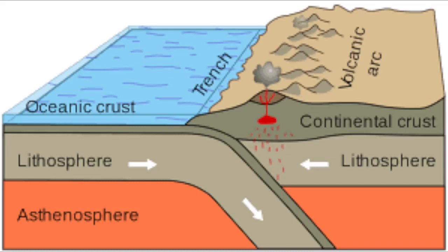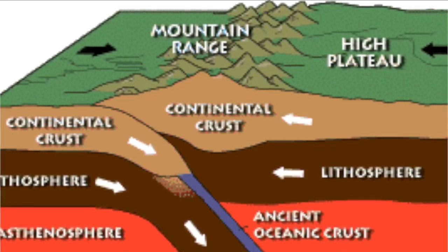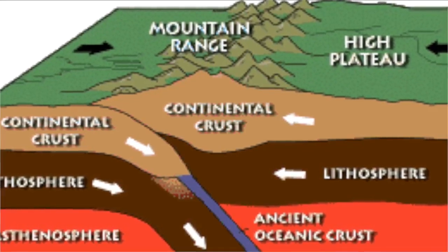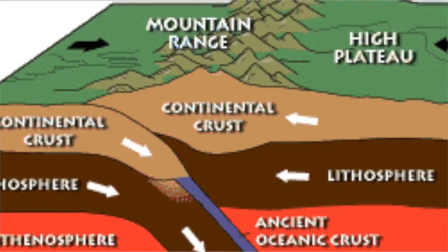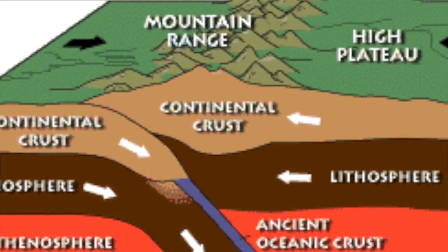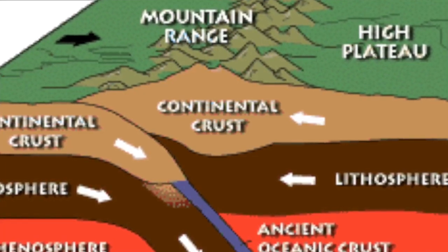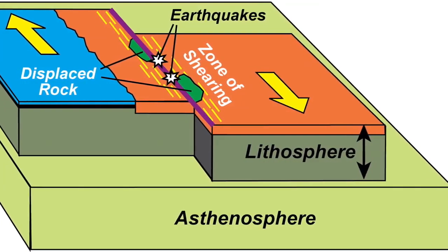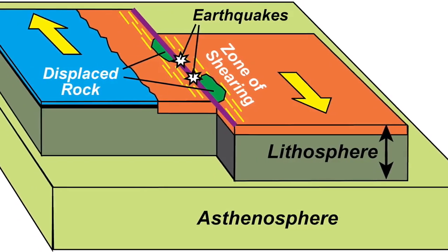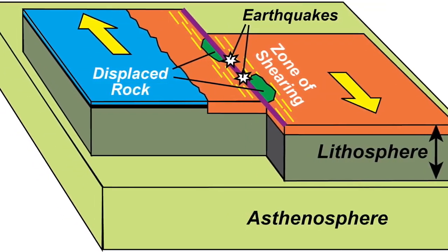At a convergent boundary where you have two continental plates, you won't get subduction — instead you get a collision that creates mountains, a buckling and uplifting of all that continental material. That's what happened when North America, South America, and Africa ran into each other — they created the Appalachian Mountains. The final type is transform plate boundaries, where the boundaries of two plates go parallel to each other, usually in opposite directions. When they slide or slip past each other, that's what creates earthquakes.